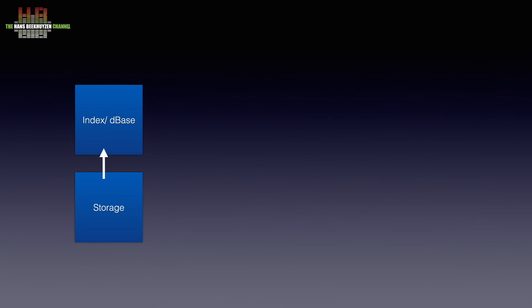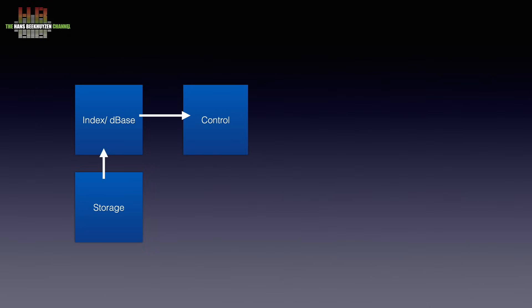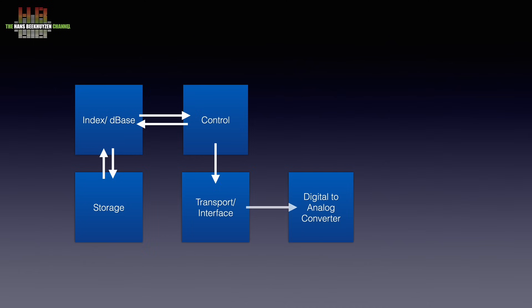Next you need a control function that allows you to select music, put it in a playlist and send the files from storage to the transport/interface. From there it gets sent to a digital-to-analog converter where the bits are converted into music that can be played on an amplifier driving a pair of speakers or headphones.